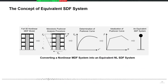Let's say that you have a full three-dimensional nonlinear multiple degree of freedom system model and you apply some load pattern and push that building and plot the pushover curve. So you already have the base shear versus roof displacement curve for your building, where VB is the force on the y-axis and roof displacement is on the x-axis.